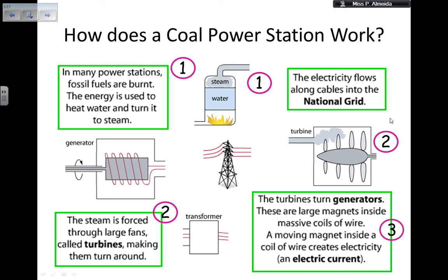Then, the turbine is connected to a generator. As it turns, it makes the generator turn. These generators are massive magnets inside massive coils of wire. Moving a magnet inside a coil of wire creates electricity and electric current. So if I have either a magnet moving inside a coil of wire, or coils of wire moving inside a magnet, electricity is generated. This is the end of the turbine spinning, making the magnet inside the coil of wire spin, and this generates electricity.